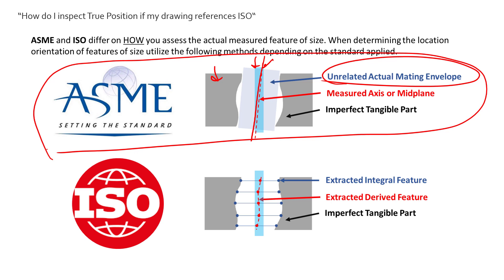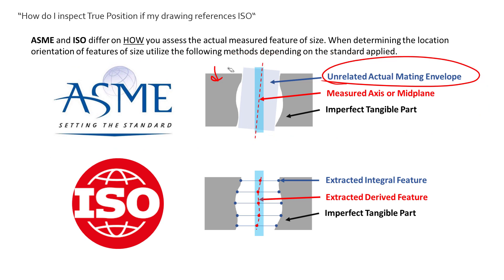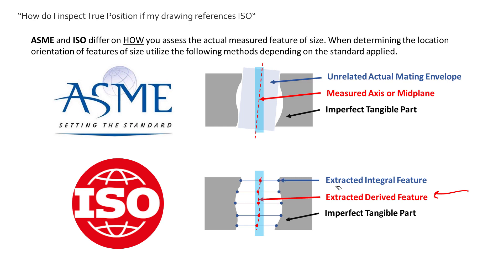Now ISO is very similar in its fundamental setup — we're still controlling the central element to a cylindrical tolerance zone back to a datum reference frame — but where it does deviate ever so slightly conceptually is we are controlling the extracted derived feature. That extracted derived feature comes from the extracted integral feature, which could look like a cross-section of this cylinder — you'd get a circle, and the center point of that circle is going to be our extracted derived feature. We gather a bunch of these extracted derived features to create an abstract line, and as long as this line stays inside the tolerance zone, we are passing position specification per ISO.